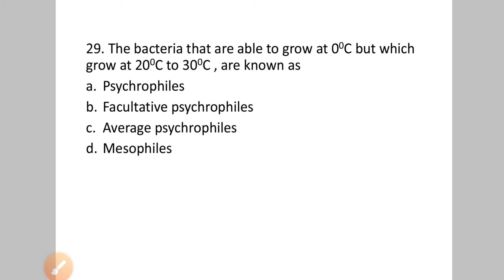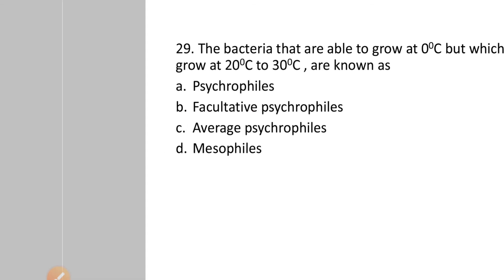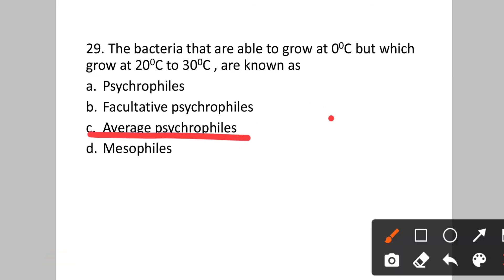Question number twenty-nine: Bacteria that are able to grow at 0°C but grow best at 20°C to 30°C are known as? Option A: psychrophiles. B: facultative psychrophiles. C: average psychrophiles. D: mesophiles. These bacteria that grow at 0°C but optimally at 20–30°C are known as average psychrophiles. Answer will be option C.